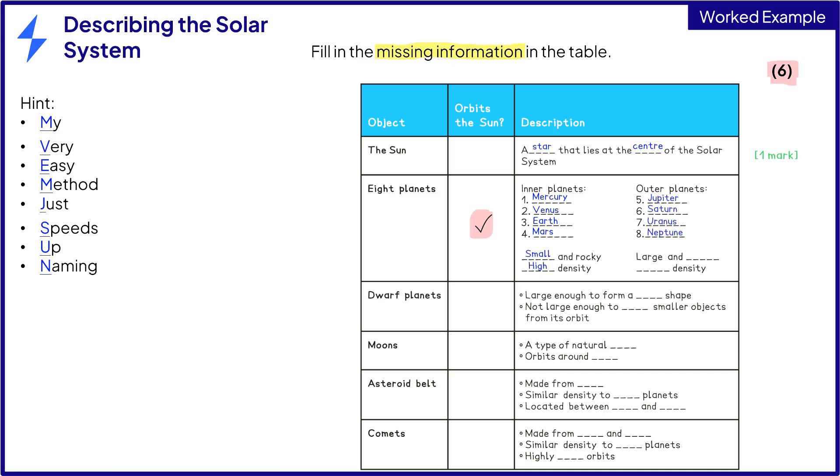The outer planets are Jupiter, Saturn, Uranus, and Neptune. These planets are large and gaseous, so they must have a low density. Dwarf planets do orbit the sun. They are large enough to form a spherical shape, but not large enough to clear their orbits.